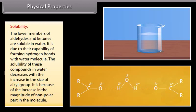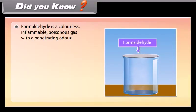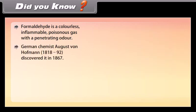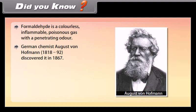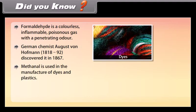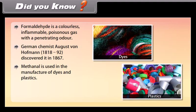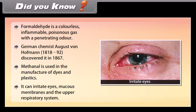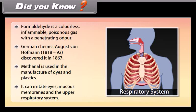Did you know? Formaldehyde is a colourless, inflammable, poisonous gas with a penetrating odour. German chemist August von Hofmann (1818–1892) discovered it in 1867. Methanal is used in the manufacture of dyes and plastics. It can irritate the eyes, mucous membranes, and the upper respiratory system.